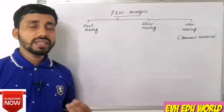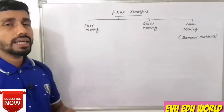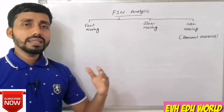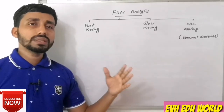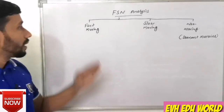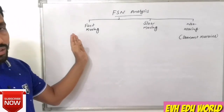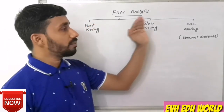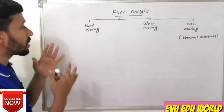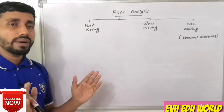The next inventory control technique is FSN analysis. Here, materials are classified into three categories based on their movement: fast-moving, slow-moving, and non-moving. Fast-moving materials are those required for regular production.